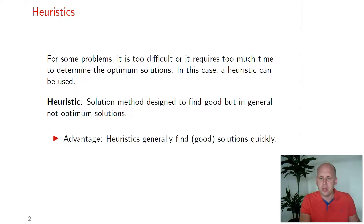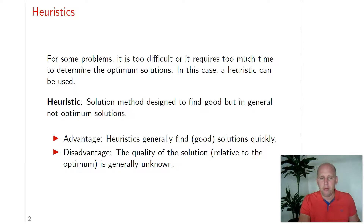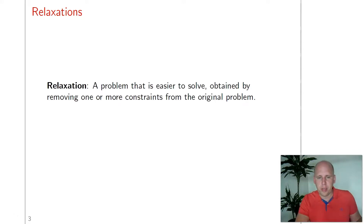The advantage is that we get a solution quickly. The disadvantage is that the solution is typically not the optimal solution, and we also don't know what the quality of the solution given by a heuristic is. However, we can also talk about relaxations, and relaxations of a problem will tell you something about the quality of the solution of a heuristic.